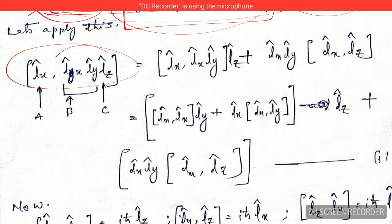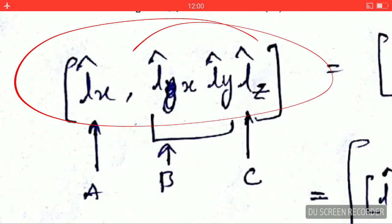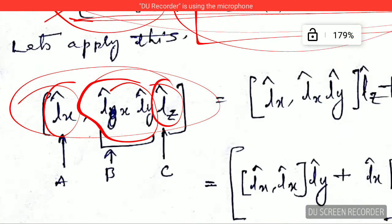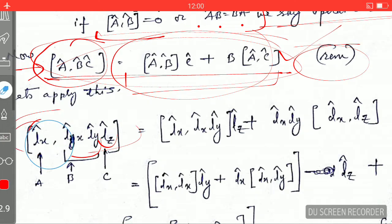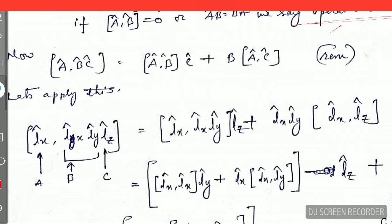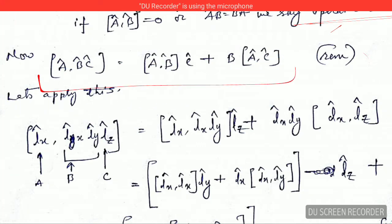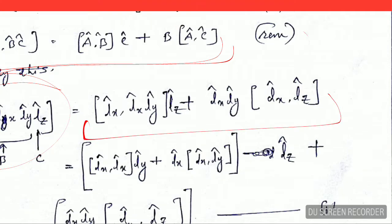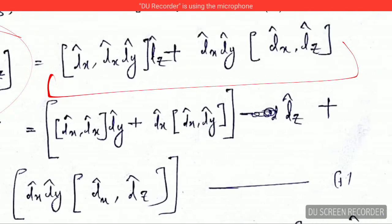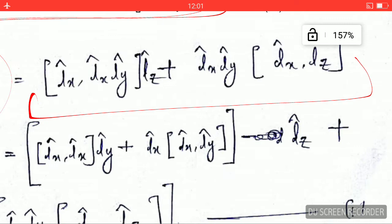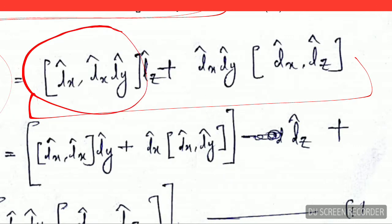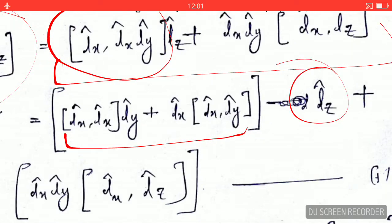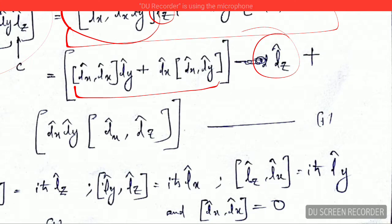I have applied that identity at this point. I have taken A equals Lx, this quantity as B, and this quantity as C, and used the above identity. On applying this identity, I can arrive at this equation. I am going to apply the same identity again in this commutator, and this L that is outside remains as is. This is how we reach equation number one.